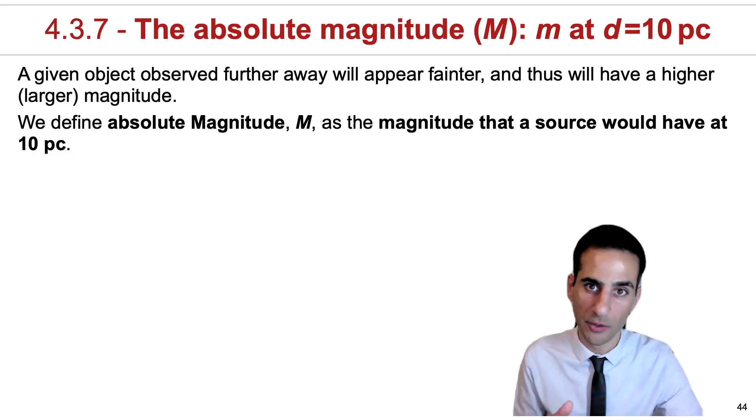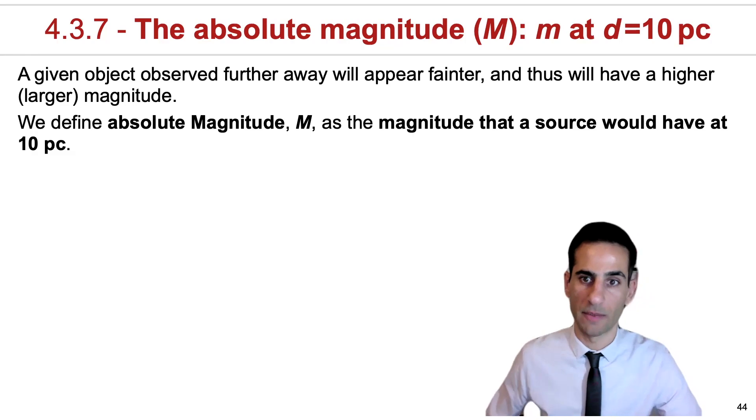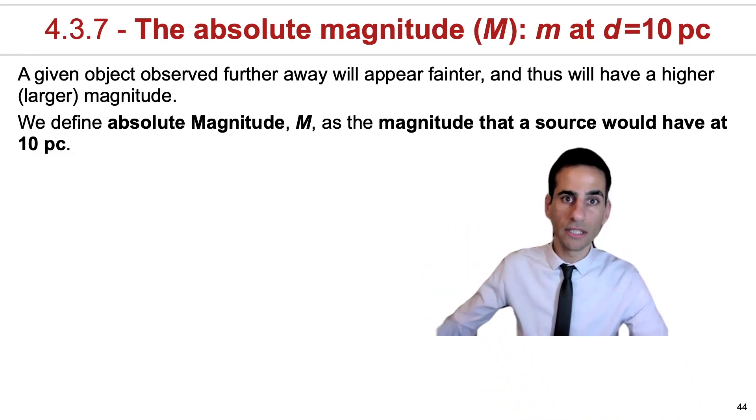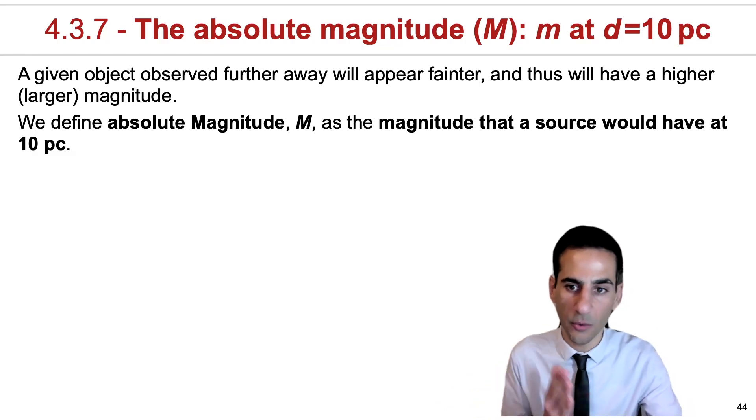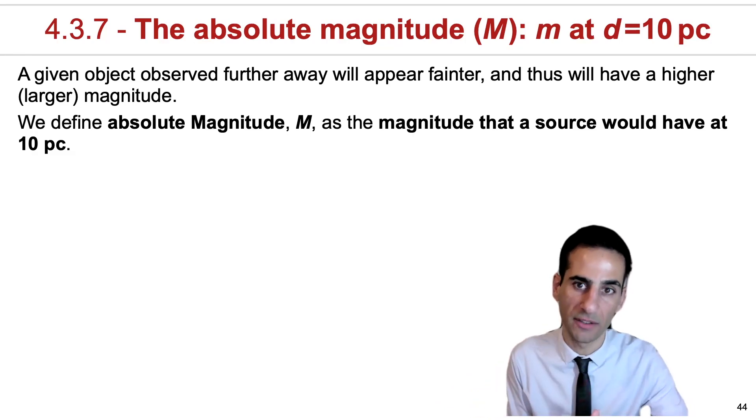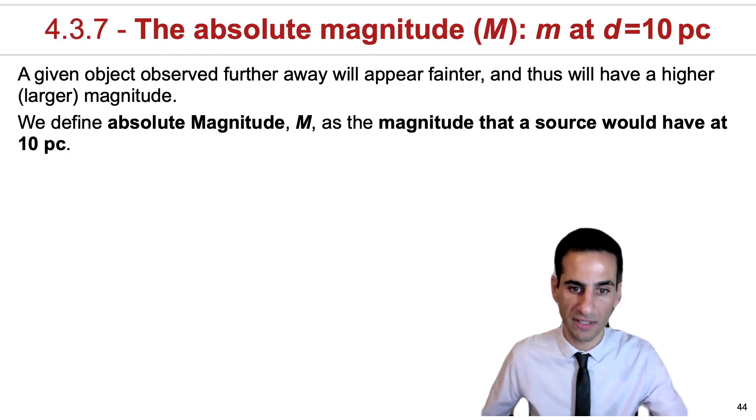Now, there is a magnitude that does not depend on distance. That is called the absolute magnitude that you see here. This is denoted with a capital M, and the way that we define absolute magnitude is as the apparent magnitude when the source is at 10 parsec away from us, so this is the definition.